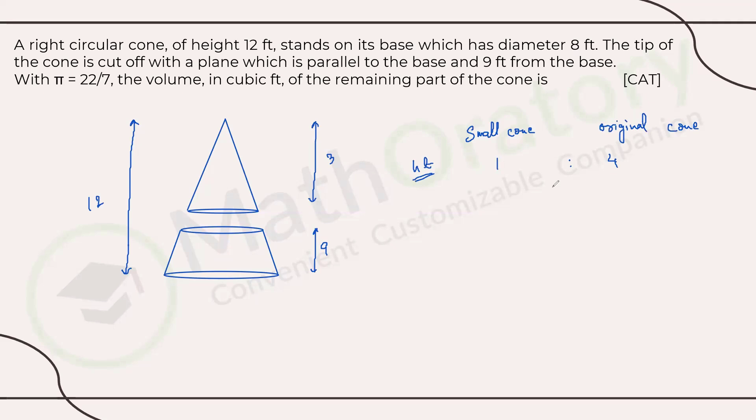Now, concept of similarity, if single dimensions, height is a single dimension, right? Height is measured in centimeter, meter, inches, something like that, in this case feet. So if any kind of single dimension are in the ratio 1 is to 4, then corresponding three dimension, volume is what we are concerned with. So volume will be in the triplicate ratio. So cube of that, so it will be in the ratio 1 cube is to 4 cube, that is 1 is to 64, meaning the small cone, that is the one above has 1 by 64 volume of the original cone.